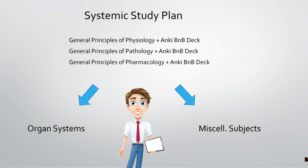We'll cover general principles of physiology, then pathology, then general principles of pharmacology. Along with these general principles, we are also going to attempt questions. For that purpose, we are going to use Anki BNB deck flashcards. After finishing general principles, we divide our study plan into two major sections.